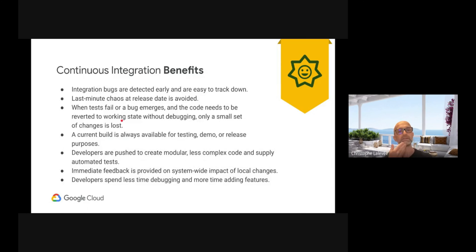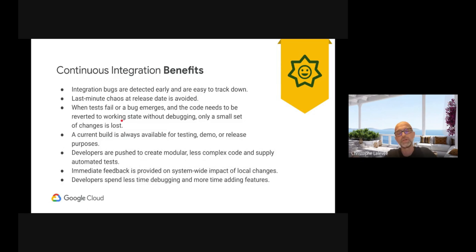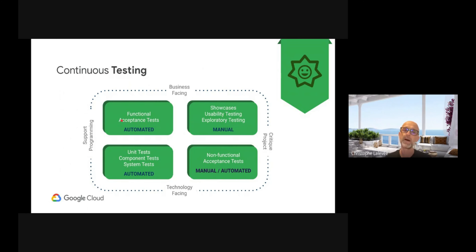The benefits of continuous integration are: fewer bugs, more reactive, more agile in development — able to produce updates and respond to business needs more quickly when they need something. This applies for application code, but also for Apigee. There is nothing special for Apigee in this regard. The last pillar of CI/CD is continuous testing. We could test a lot of things in different ways.